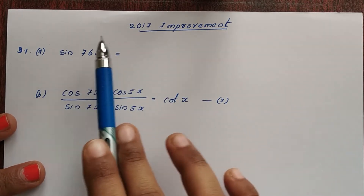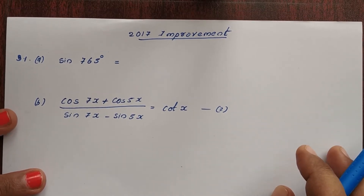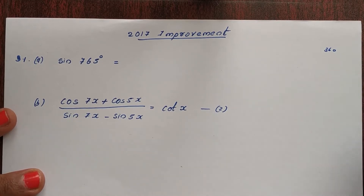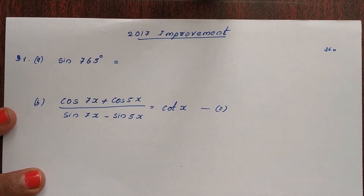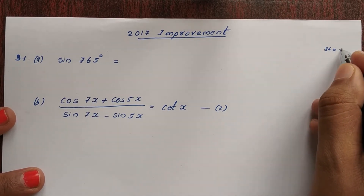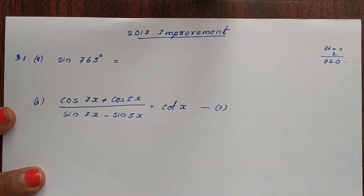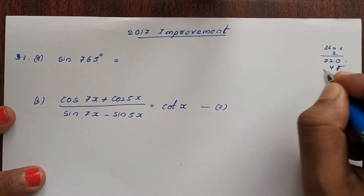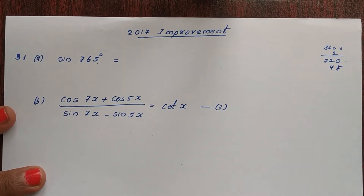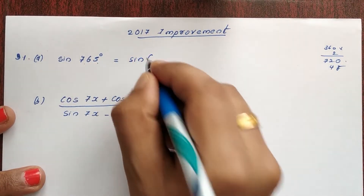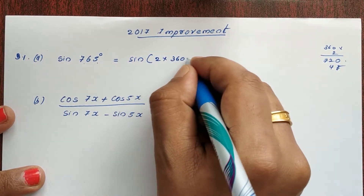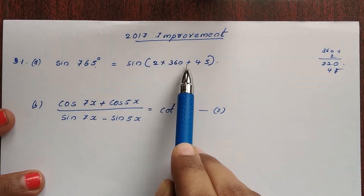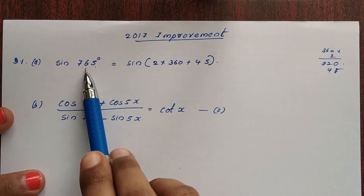We will convert it. What we have done here is write it in terms of 360. So here we have 360 into 2, which is 720. If I have 765, then we have 720 plus 45. So we write sin(2 × 360 + 45). Two into 360 is 720, and 720 plus 45 is 765.